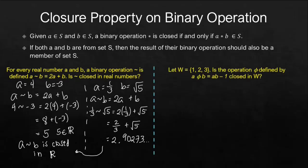Next, we have this given set. This time, this is not under the big umbrella of the real numbers. This is just limited to set W, having the elements 1, 2, 3. Is this operation phi defined by A phi B is equal to AB minus 1? Is this closed in set W?